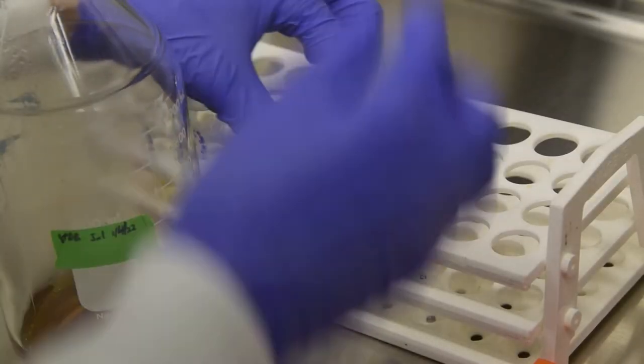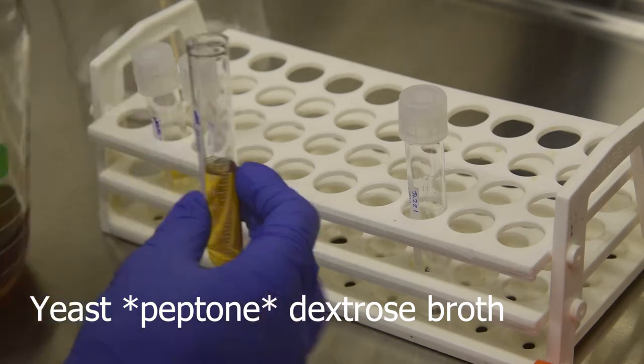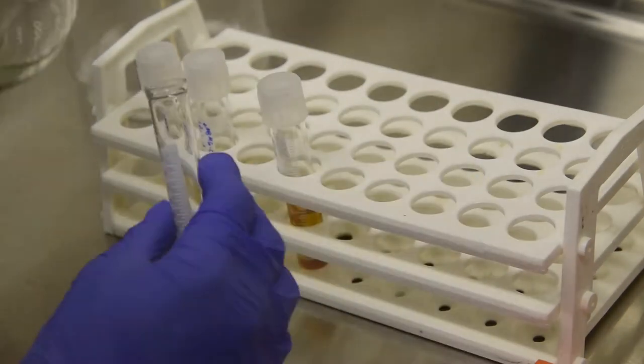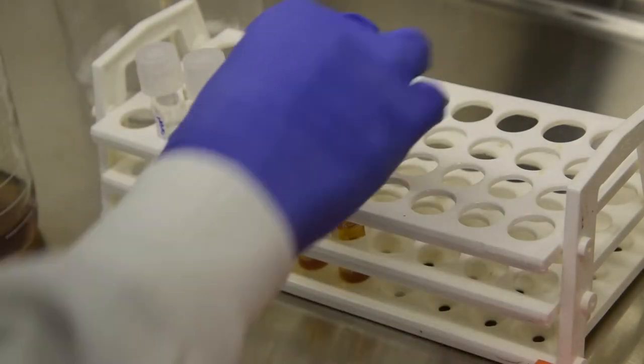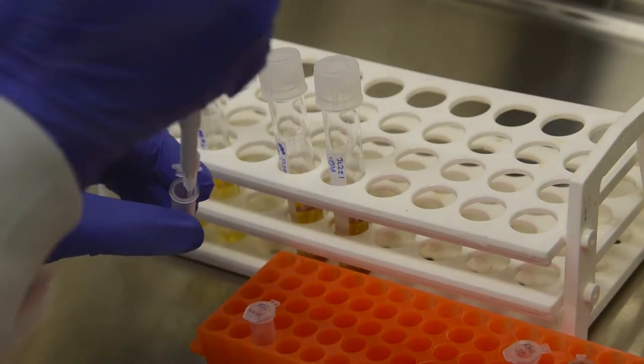The yeasts are grown in yeast potato dextrose broth, which contains 1% yeast extract and 2% each of peptone and dextrose. You can add yeast cells suspended in water, like I am doing here, or pick colonies from a plate as with the agro.